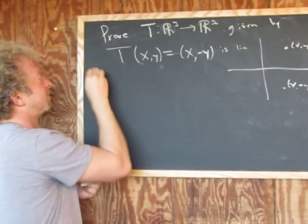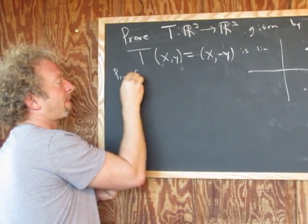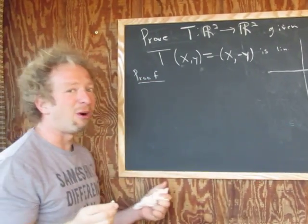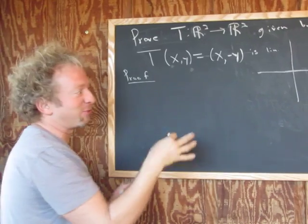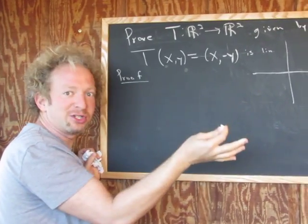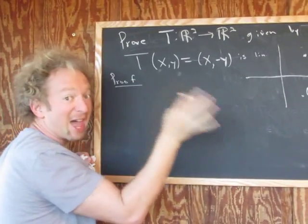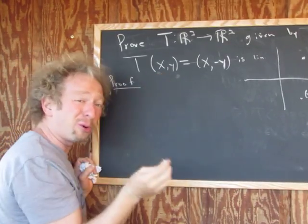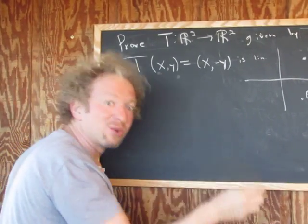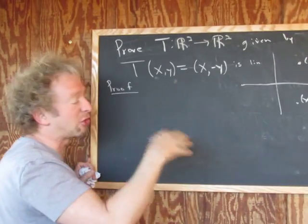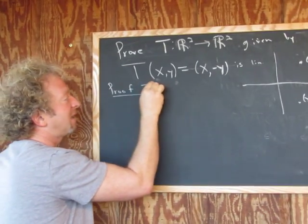So we have to prove this is linear. So proof. I have to write really small, because this is a long proof. Well, it's not that long. We have to show the two conditions. So we have to show, let's do the additive part first. So the vectors here are ordered pairs. So we can't just say take X and Y. We have to say take X1, Y1, X2, Y2.